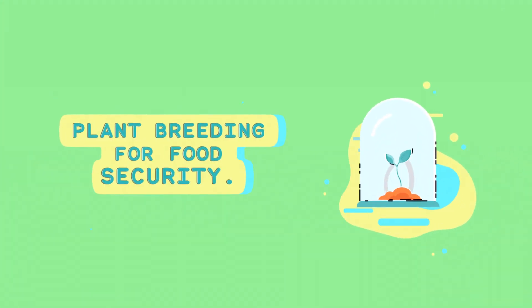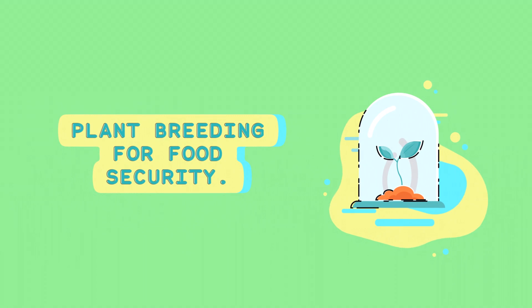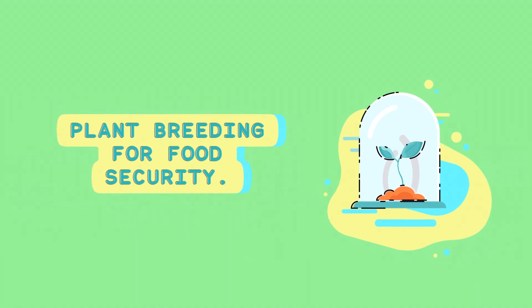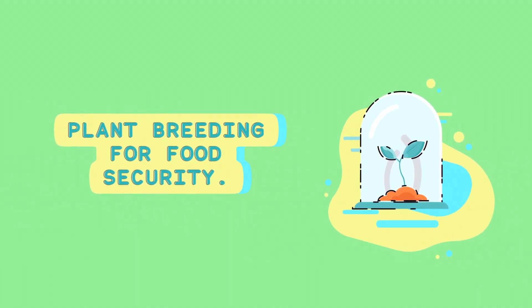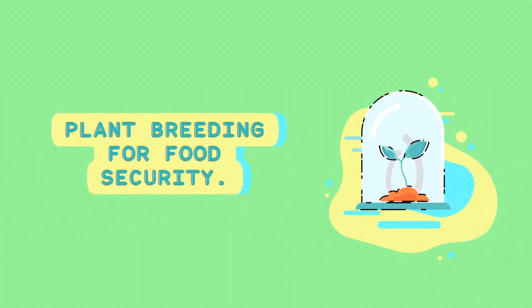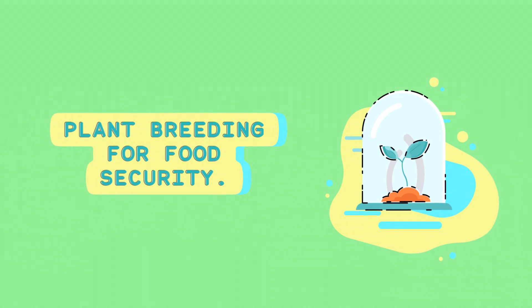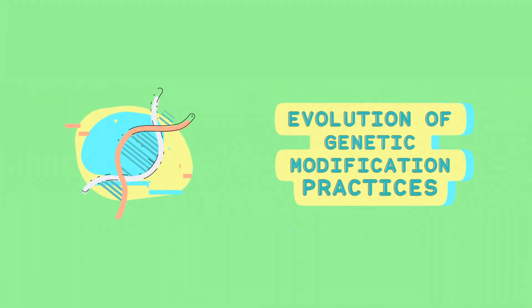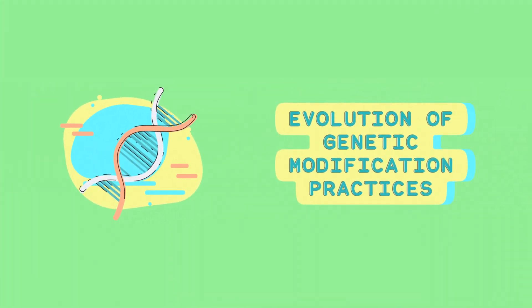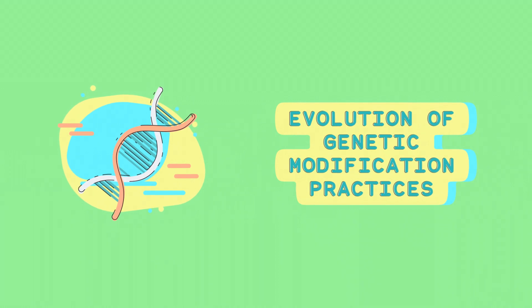This discussion delves into the history, methods, and benefits of plant breeding, exploring its role in ensuring food security and a sustainable future. From selective selection to genetic engineering — a historical journey.